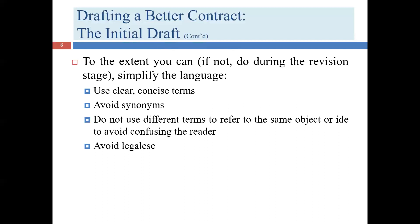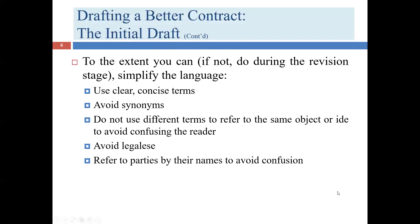Refer to parties by their names rather than pronouns. You can use a shortened version — initials or an abbreviated corporate name. For an individual, typically use the surname. However, if two brothers with the same surname are entering a contract, that won't work, so you might use first names. Avoid 'party of the first part' and 'party of the second part' — these are artificial distinctions that are easy to confuse. Also avoid ambiguous pronouns.